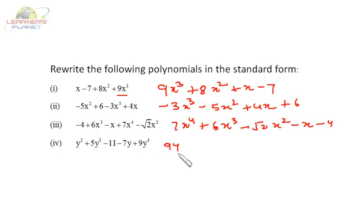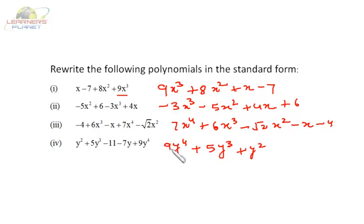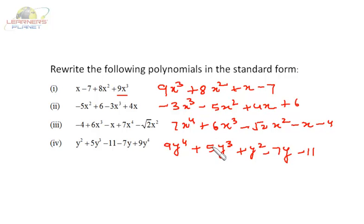Let's begin with 9y⁴ + 5y³ + y² - 7y - 11. This is the method to write a polynomial in standard form.